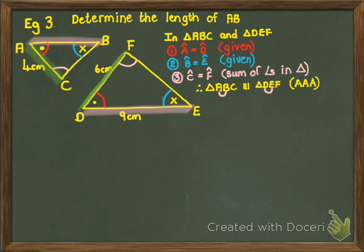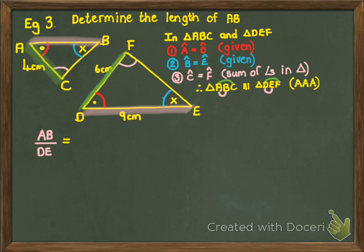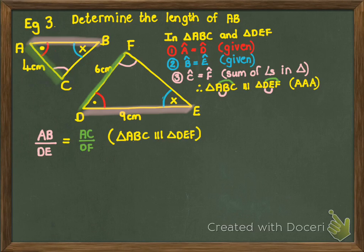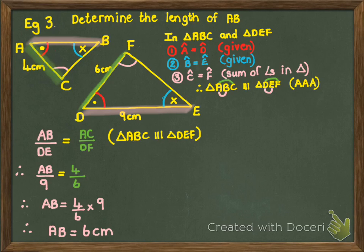Being in proportion means AB over DE must equal AC over DF, because triangle ABC is similar to triangle DEF. Filling in what we know: DE is 9, AC is 4, and DF is 6 — the only unknown is AB. Multiplying both sides by 9 gives AB equals 6 cm. This is the most common way of asking a similarity question in grade 10: prove similarity using angle, angle, angle, and then use the knowledge of ratios to find the length of a side.